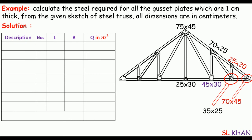We calculate gusset plates in terms of area because the thickness is just a small value, so it's better to calculate in palm of area, like we do for plaster work. If you need to calculate the weight of the gusset plates, you can calculate the volume and multiply by the unit weight to get the weight.